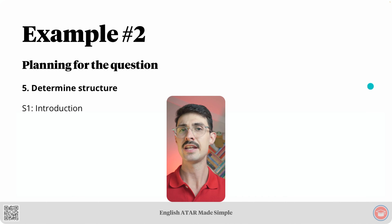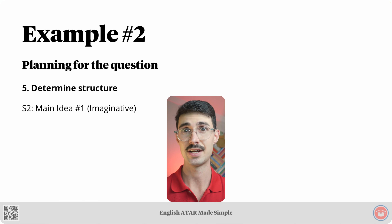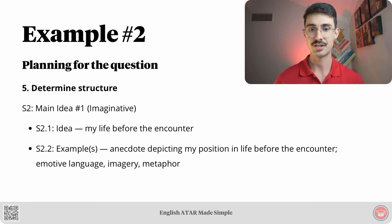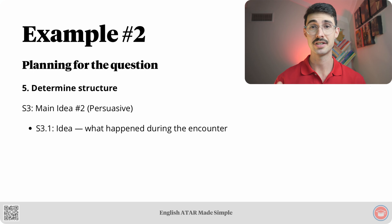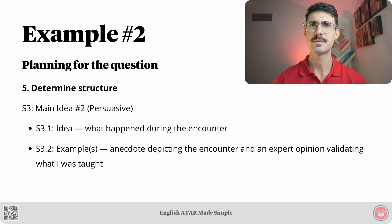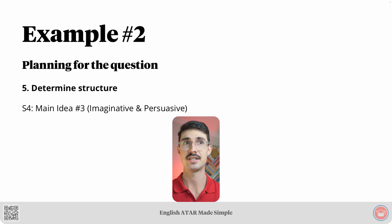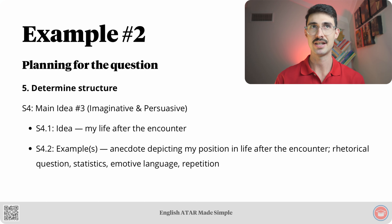Step five: determine structure. In the introduction, section one, I will activate my audience through referring to a hypothetical situation of feeling lost and lacking direction in life. Section two discusses main idea number one with a focus on imaginative language features — my life before the encounter — using an anecdote depicting my position in life before the encounter, with emotive language, imagery, and a metaphor or two. Main idea number two, section three, has a focus on persuasive language features. The main idea is what happened during the encounter, using an anecdote and an expert opinion that validates what I was taught. Section four, main idea number three, uses a mix of imaginative and persuasive features. The main idea is my life after the encounter, using rhetorical questions, statistics, emotive language, and repetition.